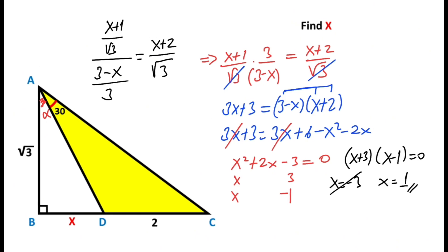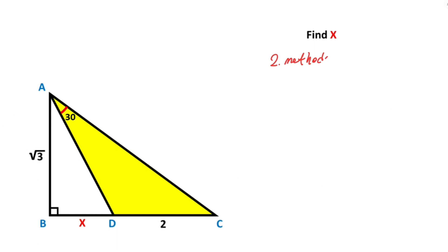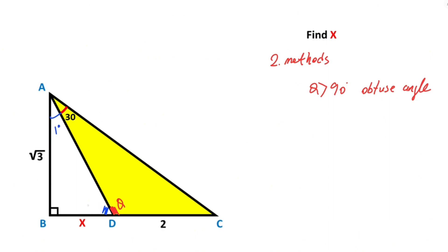That was the first method. Now we will calculate x using a second method. First, notice that if we call this angle theta, theta is greater than 90 degrees — it is an obtuse angle. Because if theta were 90 degrees, angle BAD would have to equal 0 degrees, which is impossible. For example, if angle BAD is 1 degree, then angle ADB must be 89 degrees, confirming theta is greater than 90 degrees.